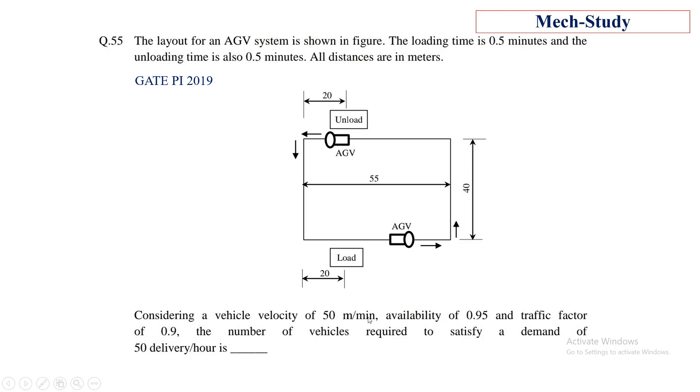Considering a vehicle velocity of 50 meters per minute, availability of 0.95, and traffic factor of 0.9, the number of vehicles required to satisfy a demand of 50 deliveries per hour is what we have to find.